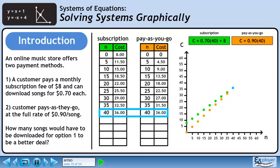At 40 downloads, we've reached the intersection point. 40 songs will cost $36 with a subscription and $36 without. So when 40 songs are purchased, both options will be exactly the same price. Note that the point (40, 36) is the only ordered pair that exists in both tables.